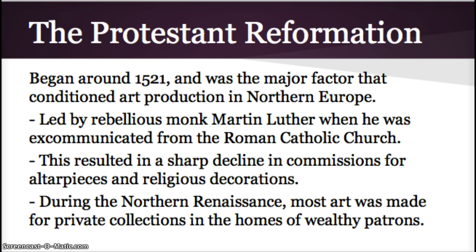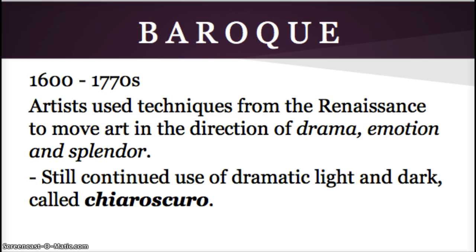During the Protestant Reformation in the Northern Renaissance, most art was made for private collection in the homes of wealthy patrons, as opposed to palaces. The Baroque period, from 1600 through the 1770s, saw artists use techniques from the Renaissance to move art in the direction of drama, emotion, and splendor. This period had more varied styles than the Renaissance, yet much of the art shows great energy, feeling, and a dramatic use of light, scale, and composition — including the continued use of dramatic light and dark, called chiaroscuro.